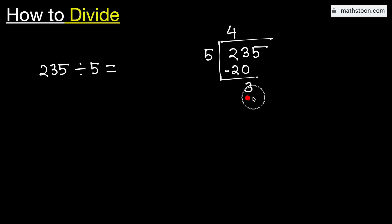Now, 3 is less than 5. That is why we need to bring down this number 5 here. And we know that 5 times 7 is 35. Subtracting, we get 0.